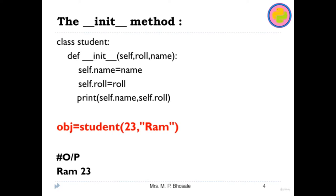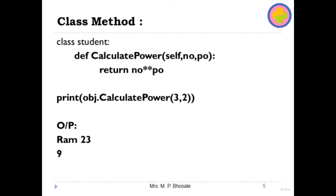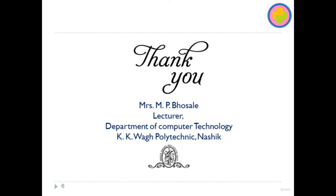Now we will move to the next topic, which is how to write a class method. To write a class method, we use the def keyword followed by the method name. In the brackets we use the self parameter first, then remaining parameters. You then put a colon and write the statement. To call this method, you use the object dot function name followed by any parameters.